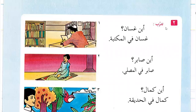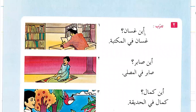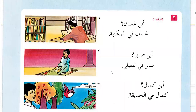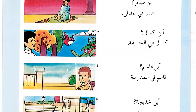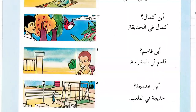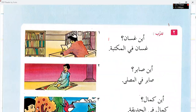Then we have the Darur mean exercise with vocabulary from the previous dialogue. Aina means where. Fi means in. Maktaba means library. Al-Musalla means the place of prayer where Muslims say their prayers. Hadika means garden. Madrasah means school. Malab means playground.